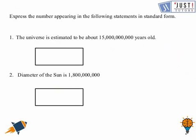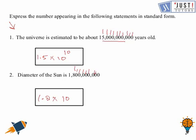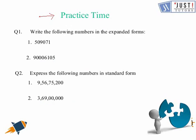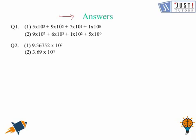Now we move ahead, and here are some more questions where you need to express very large numbers in standard form. The answer is 1.5 times ten raised to the power ten. Another is 1.8 times ten raised to the power nine. In this way we can express big numbers in standard form. Here are some practice questions for you to try — you can pause the video. Here are the answers; you can match them and pat yourself on the back for working really well using standard form to express large numbers.